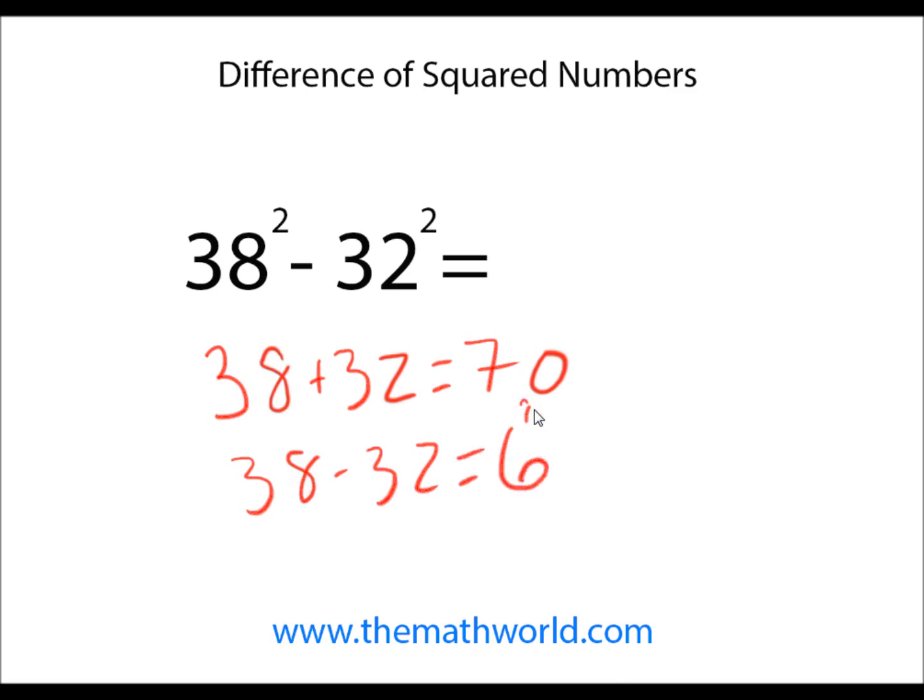And then you just have to multiply these two numbers. So 70 times 6 is 420. So the difference of 38 squared minus 32 squared is 420.